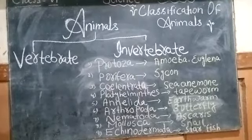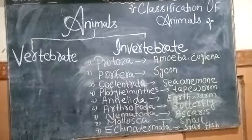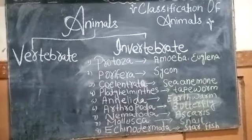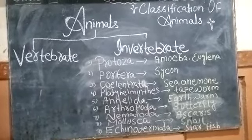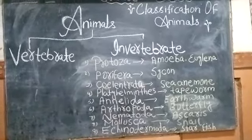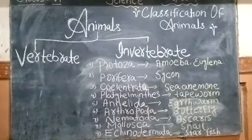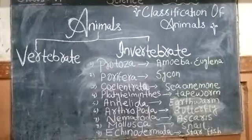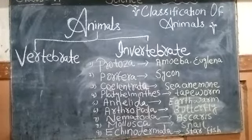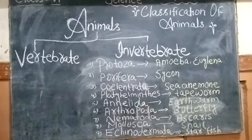One by one, we will discuss the phyla. These phyla are divided into different animals. Number one: Phylum Protozoa. These animals are so small that they cannot be seen with the naked eye — they can only be seen under a microscope. Examples include Amoeba and Euglena.